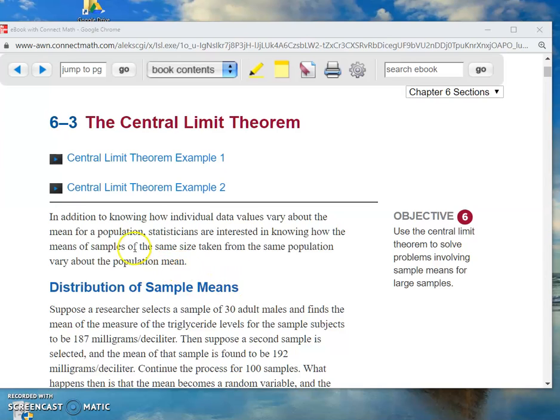Now, Section 6-3 alludes to that. Do you know what that word means? Alludes, A-L-L-U-D-E-S. When you allude to something, you make reference to something. So right here, the author says, in addition to knowing how individual data values vary about the mean for a population, so what is he saying? He's talking about what we did in Section 6-2, individual data values.